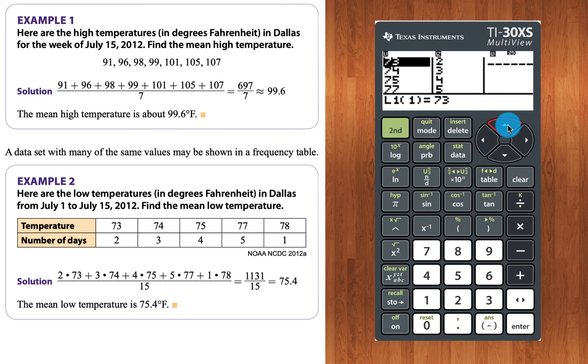All right, so in the table, in the calculator, we have a frequency list. So what do we do in order to compute the average?